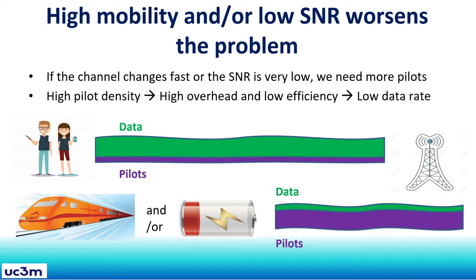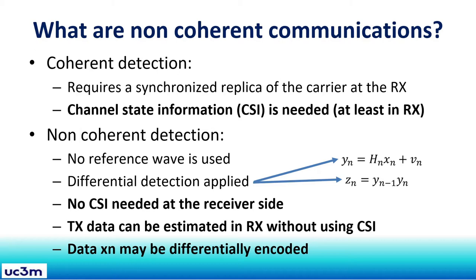In this context, non-coherent communications arise. But what are non-coherent communications? In coherent detection, we need a synchronized replica of the carrier at the receiver, and channel state information is needed at least at the receiver. In non-coherent detection, no reference wave is used. Differential detection is applied, and no channel state information is needed at the receiver side. Transmitted data can be estimated at the receiver without using channel state information, and the data may be differentially encoded.